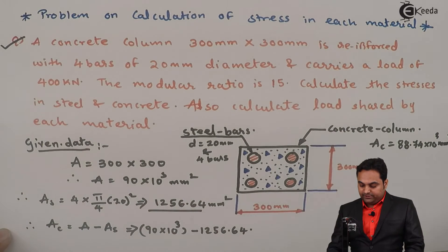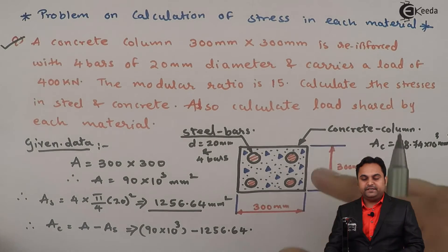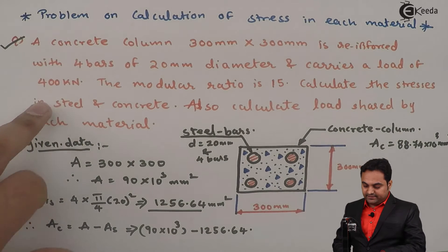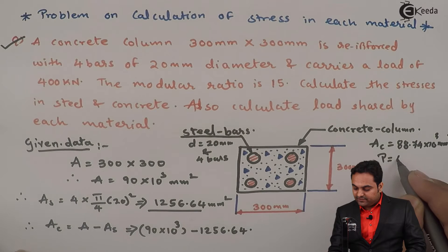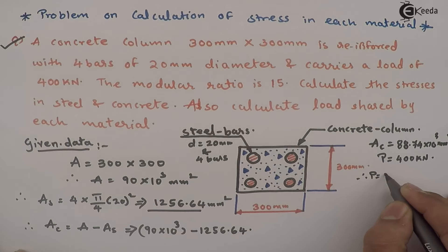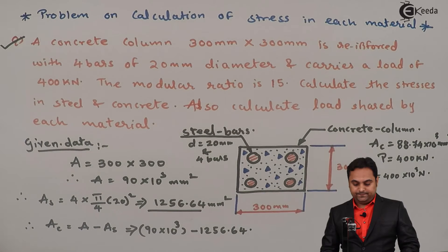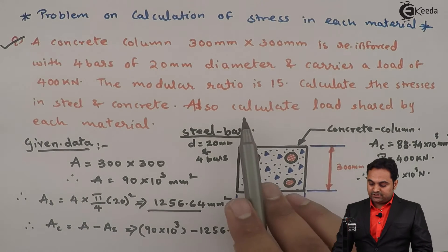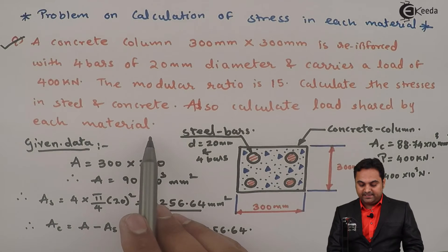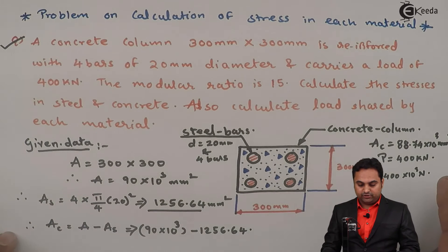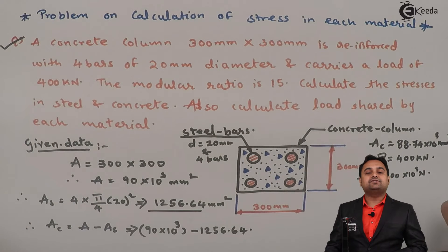The column carries a compressive load of 400 kilonewton. Converting to newton, load P = 400 × 10³ N. We have to find the stresses in steel and concrete — that is the first question — and also calculate the loads shared by each material.